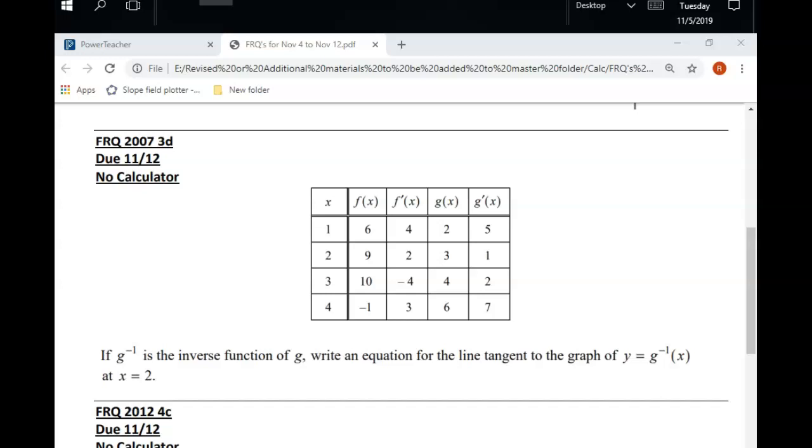But here's how inverses work, you guys. If I have g of a equals b, then the inverse of g would look like this. The input becomes the output, and the output becomes the input. So, for instance, on our table up here, what is g of 2? g of 2 is 3. In this case, this plays the role of an x value, and this plays the role of a y value. So I would look for 2 in the x column, and I'd go over to the g column, and there it is. It's 3.